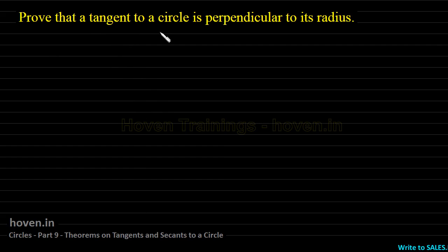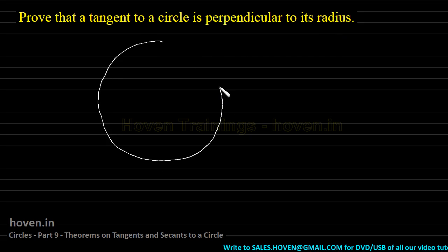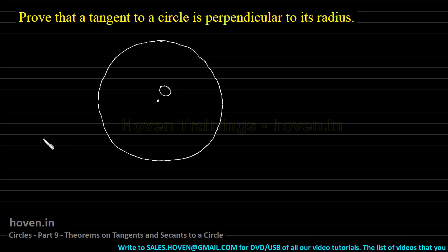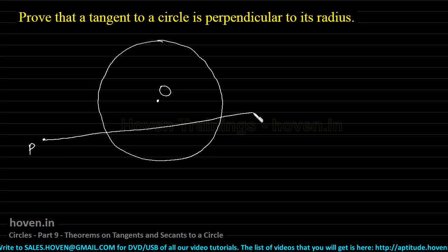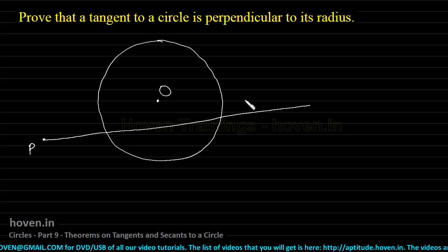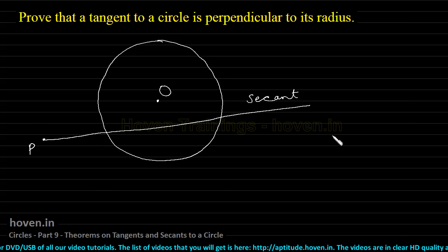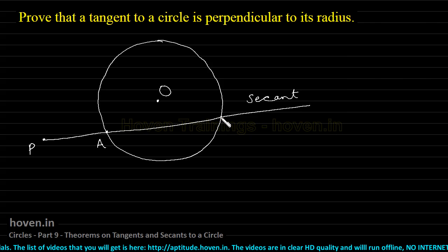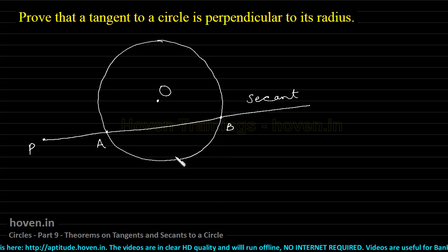Prove that a tangent to a circle is perpendicular to its radius. Let me first define what a tangent and a secant are. Suppose this is a circle with center O, and P is a point outside the circle. If I draw a line that cuts the circle, that cutting line is called a secant. This secant cuts the circle at points A and B, so PAB is a secant — a line that cuts the circle at two points.